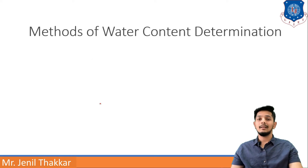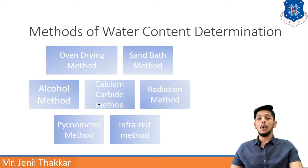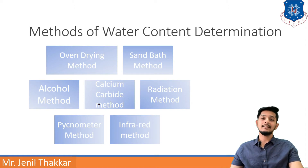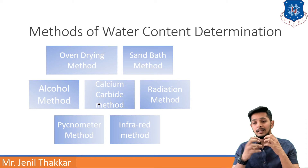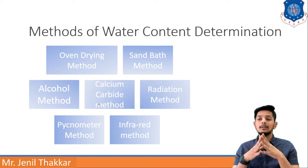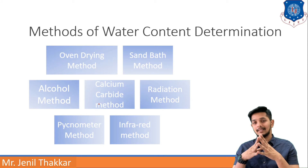Methods of water content determination — there are different methods. Here you can see seven options: oven drying method, sand bath method, alcohol method, calcium carbide method, radiation method, pycnometer method, and infrared method. Radiation and infrared methods are based on refraction. Pycnometer method and oven drying method are most popular, and calcium carbide and alcohol methods are commonly used on site.